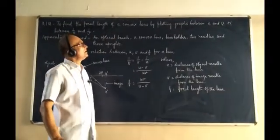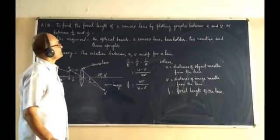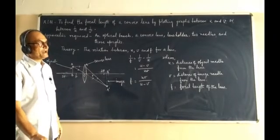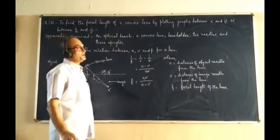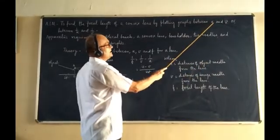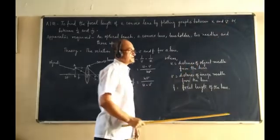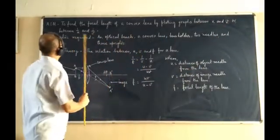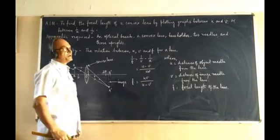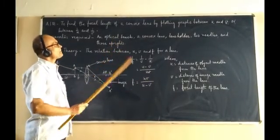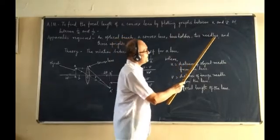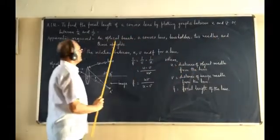Today we are going to discuss the focal length of a convex lens using an optical bench and plotting the graph between U and V, where U is the object distance and V is the image distance, and a second graph between 1/U and 1/V. Apparatus required: optical bench, a convex lens, lens holder, 2 needles, and 3 uprights.